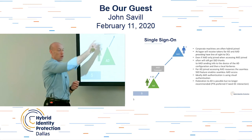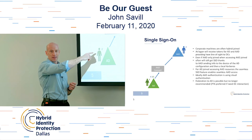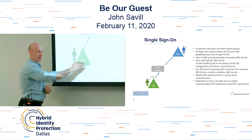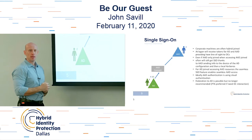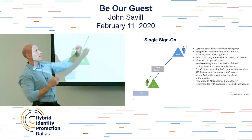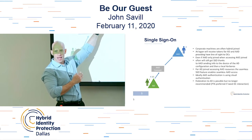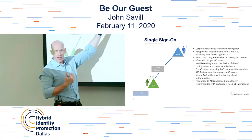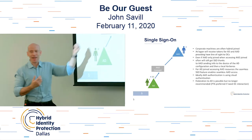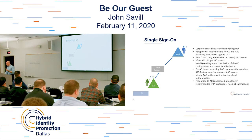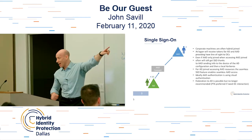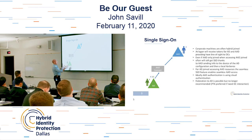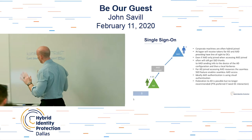Everyone should have password hash sync turned on — it helps you. Even if you're using federation or pass-through authentication, if there was a WannaCry attack and you lose your on-premises environment, you can flip a switch, break glass, and use cloud authentication because the hashes are up there. I'd strongly urge using cloud authentication for Azure AD rather than federation. But even if you don't, get the hashes up there. It's not the hash — it's the hash of the hash.